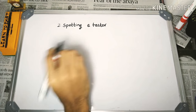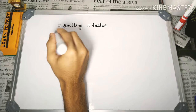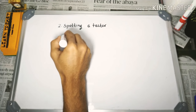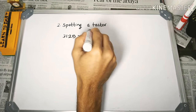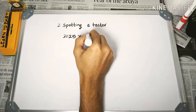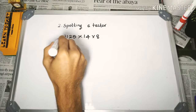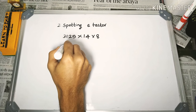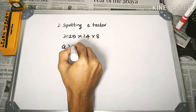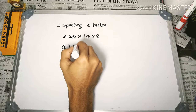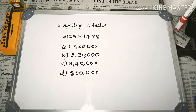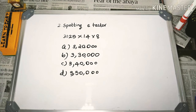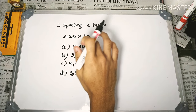Let me take the next example. The question is 3125 × 14 × 8. The options include 3,20,000 and others. We can answer this using the method of factors.